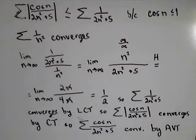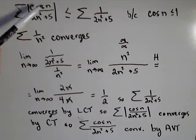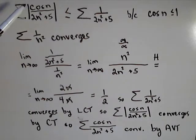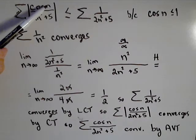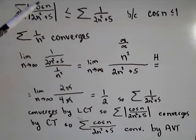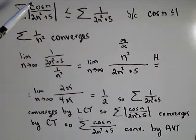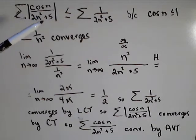One thing we didn't explicitly show in this proof — and it probably wouldn't hurt since we're using the comparison test — is that these terms will never be zero, because cosine(n) will never be zero as long as n is an integer. It would require integer multiples of pi to get zero, which would require irrational numbers. We didn't go into that step, but I did want to mention it.